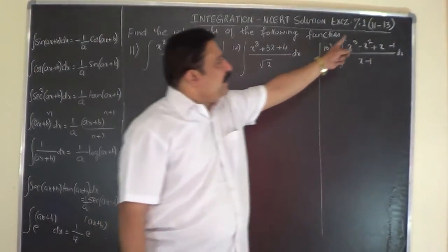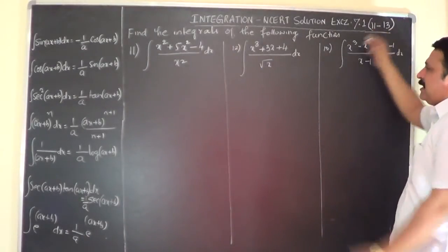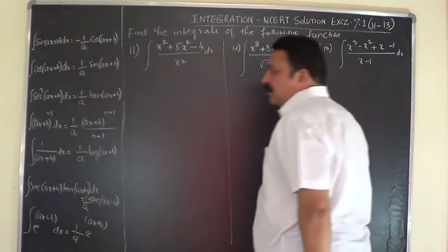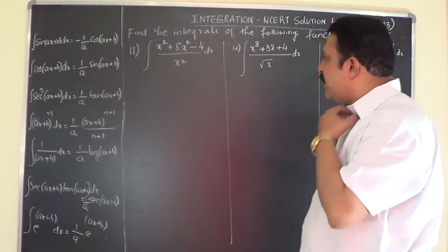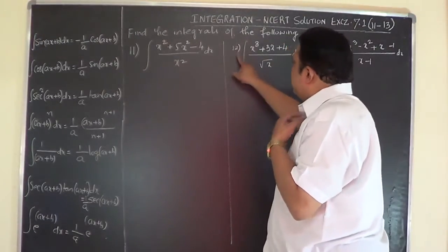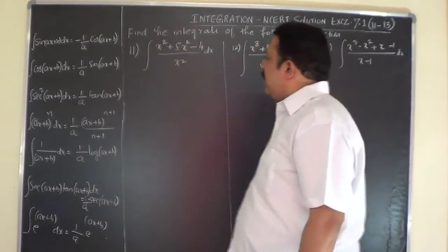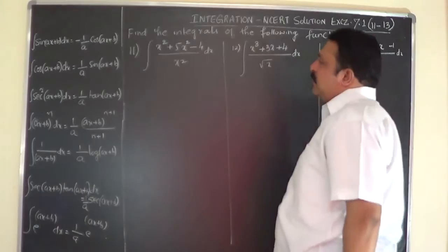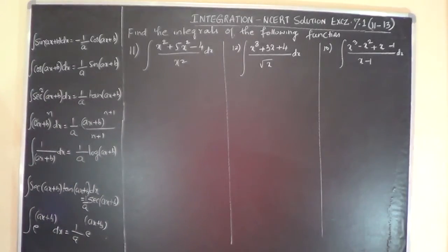We consider three problems: examples 11, 12, and 13. I keep this list of standard formulas for your reference so that as you keep looking at them, these formulas get into your memory quickly and easily. If you look at these problems, there is no trigonometric function appearing, so we are not going to use any trigonometric-related formulas. When you have a numerator and denominator in the given problem, it is better to divide the numerator by the denominator.